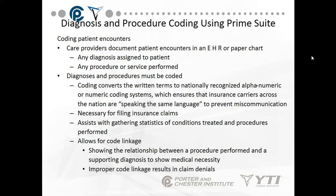Coding assists with gathering statistics of conditions treated and procedures performed — for example, tracking flu epidemic case counts using diagnostic codes in patient records. It also allows for code linkage, which shows the relationship between a procedure performed and a supporting diagnosis to demonstrate medical necessity. Improper code linkage results in claim denial — if the SOAP note does not support the procedure, you won't get paid.